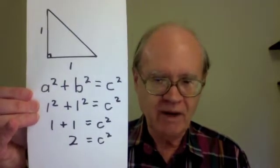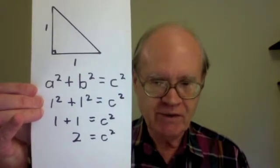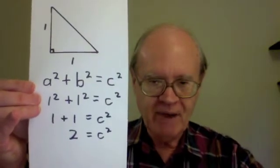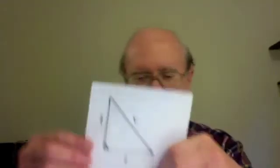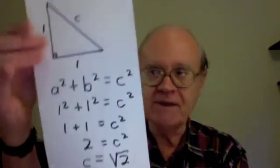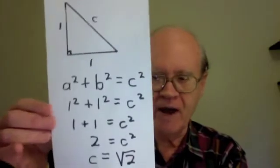One plus one equals c squared. So c squared equals two. That means that this length c is the square root of two. That's the length of the third side of the triangle.